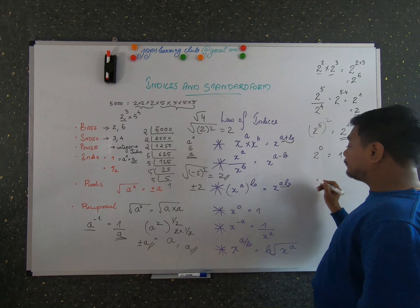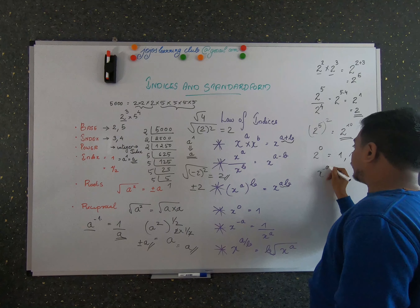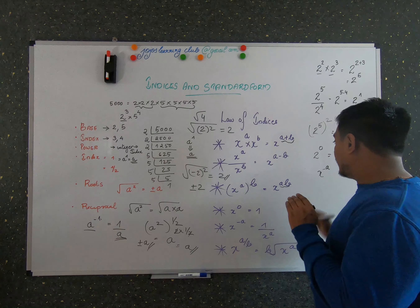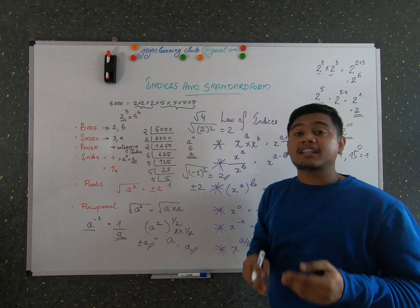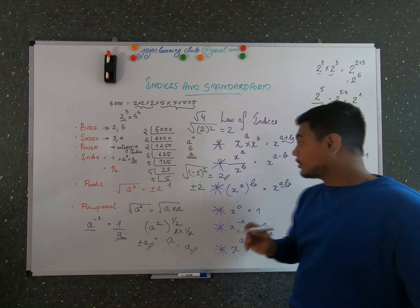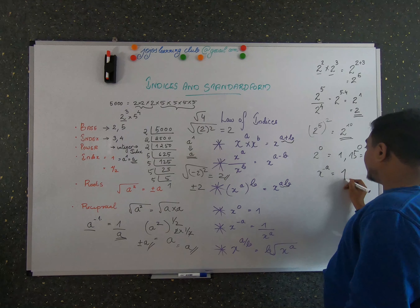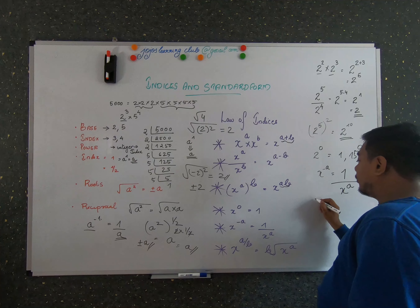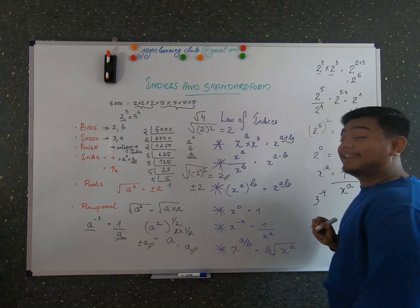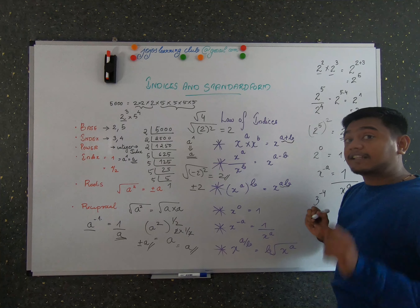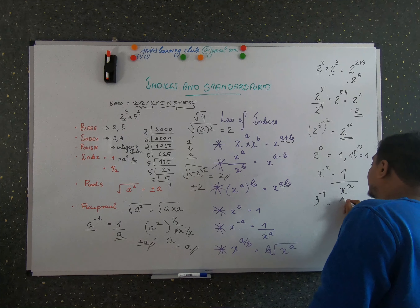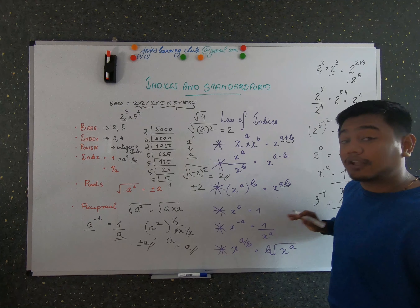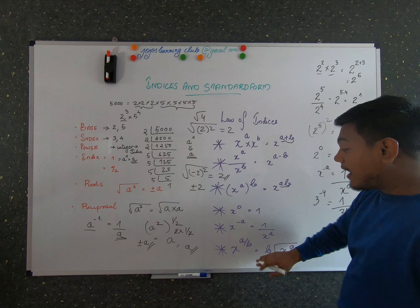The fifth law: when a number is raised to a negative power — a negative reciprocal — it equals 1 divided by x raised to a. For example, 3 raised to minus 4 can be written as 1 divided by 3 raised to 4. This is what is meant by the fifth law of indices.